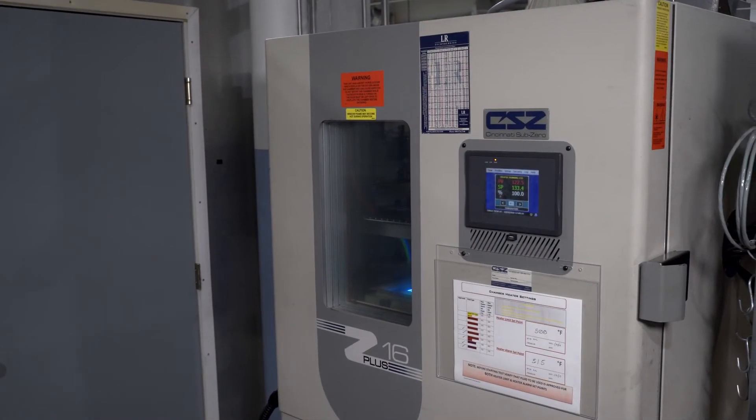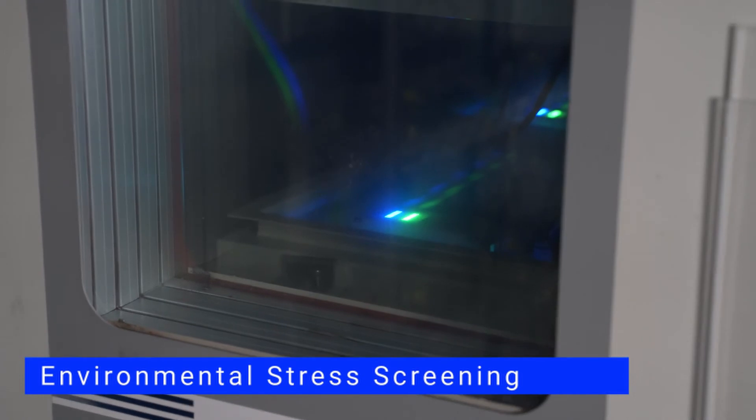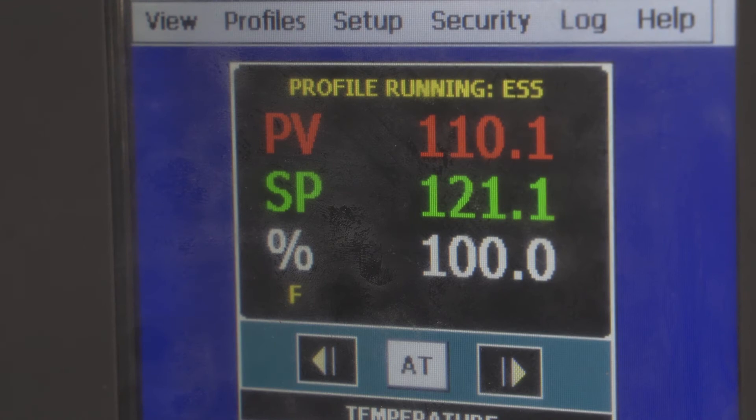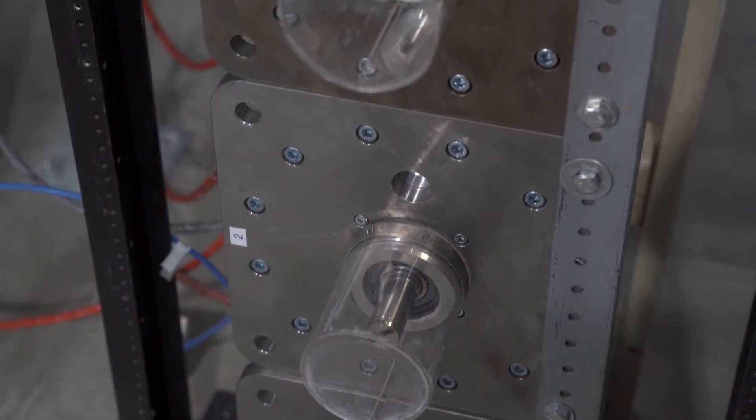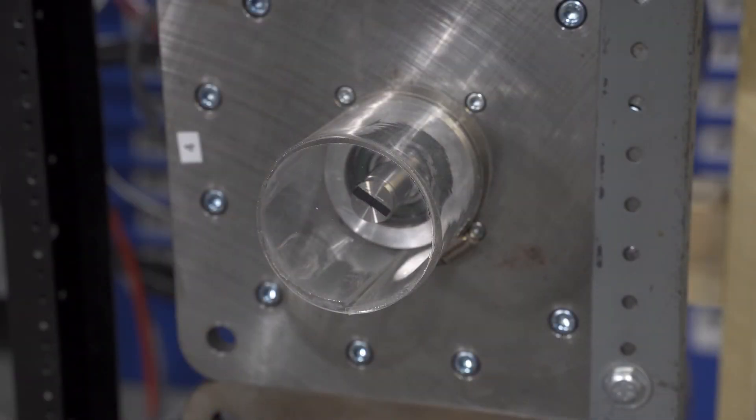A more extensive burn-in is ESS or environmental stress screening. Rather than holding a high temperature, ESS uses repeated temperature cycling from hot to cold. This causes mechanical stress on the board including the solder joints and forces any weak areas to fail in-house. For mission critical products, such as jet engine controls, we do ESS on 100% of a production run.